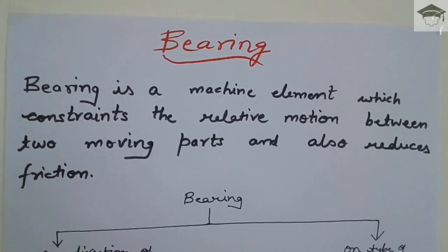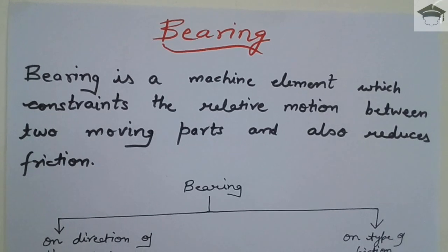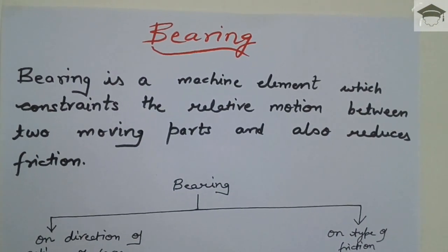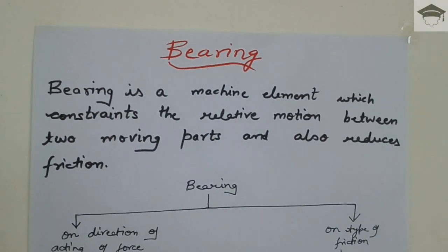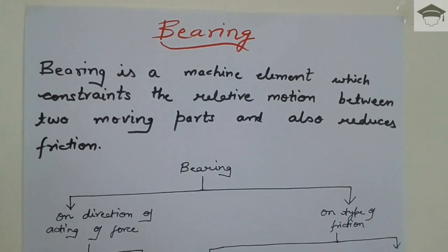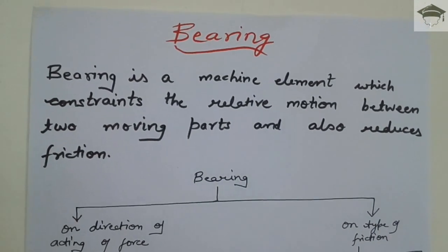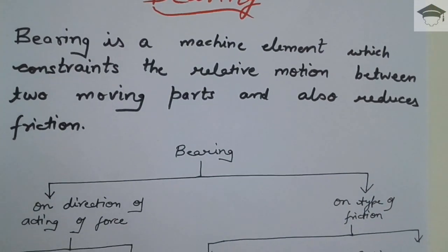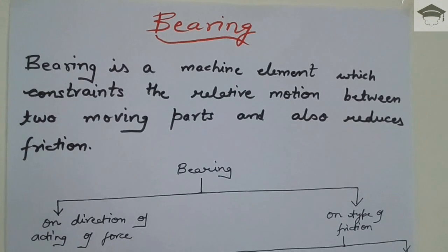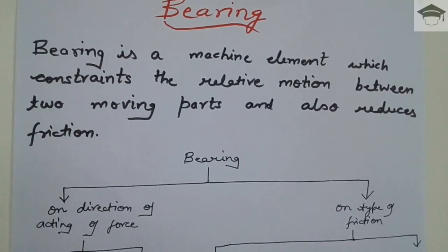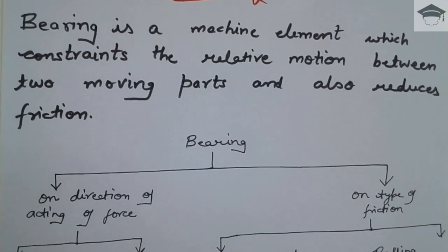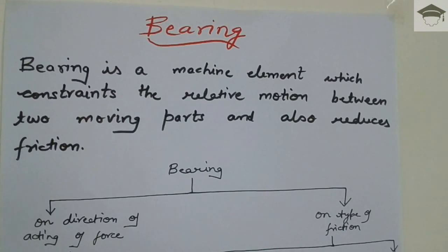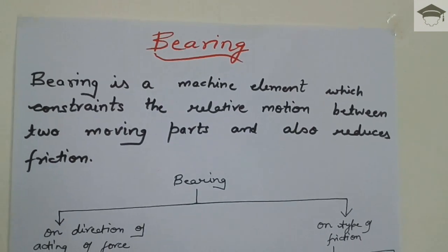Bearing is a machine element which constrains the relative motion between two moving parts and it also reduces friction. Bearing is used mainly with shafts. A shaft transfers motion or power from one place to another place, and this shaft has to be mounted on something while also allowing rotation. So bearing serves a dual purpose: it allows the motion of the shaft, supports the weight or load of the shaft, and also reduces friction.